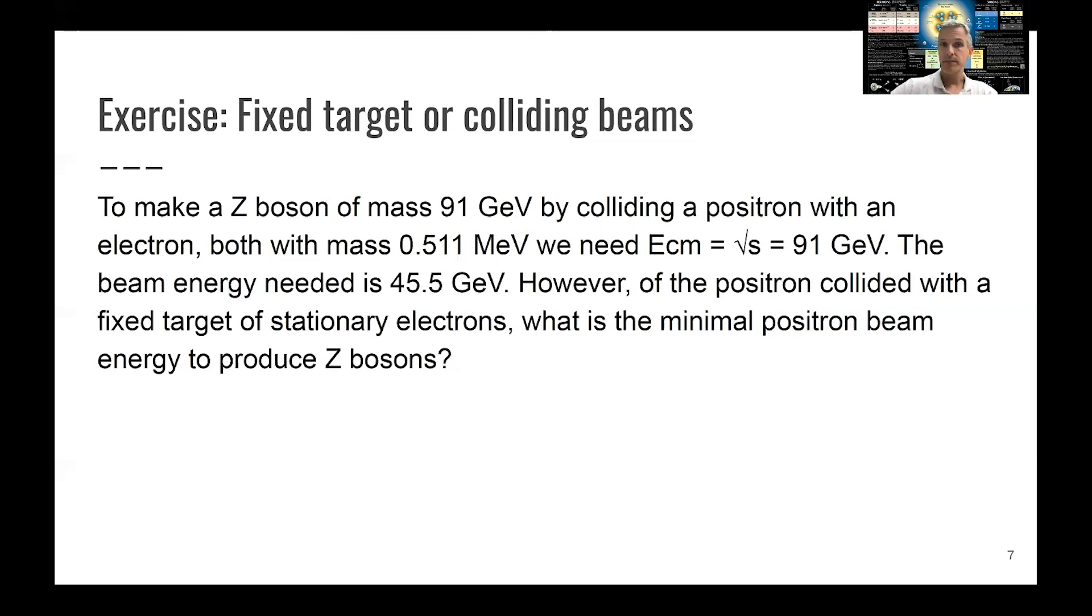So the energy needed is 45 GeV, 45.5 GeV. However, that was the setup at LEP where you have two beams colliding. So we have this center of mass energy being given by the energy, directly given approximately by the energy of the two beams.